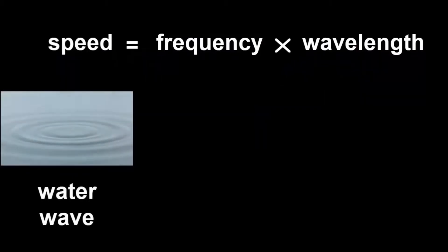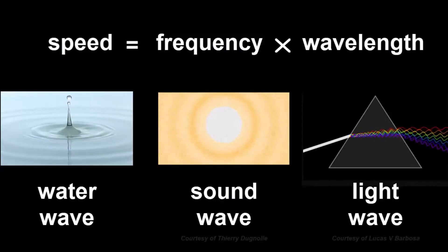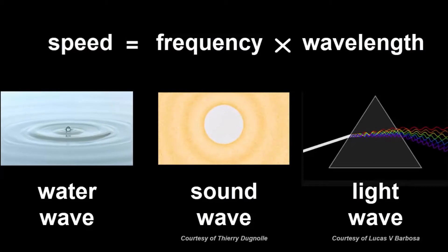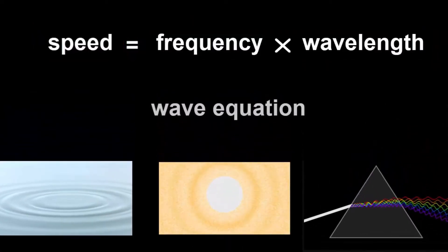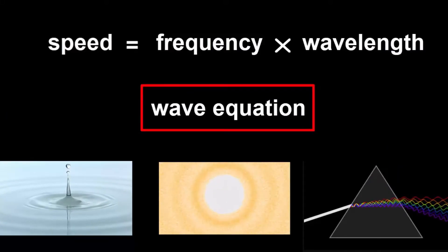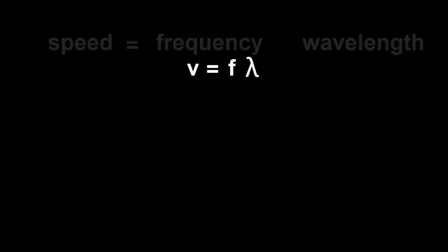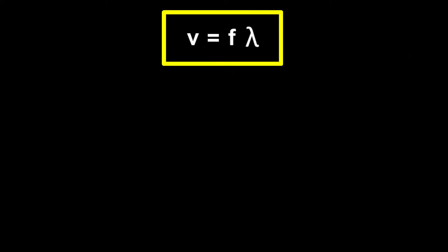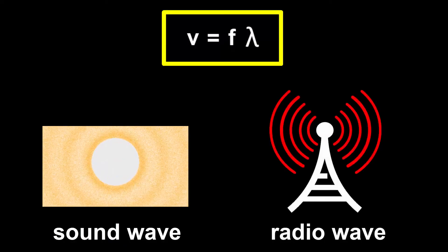This works whether it's a water wave, sound wave, or light wave. The equal sign tells us this is an equation, and because it works for all waves, it's called the wave equation. Simplifying the variables back to their letters: V equals f lambda — the wave equation. The next video will apply the wave equation to a sound wave and to a radio wave.